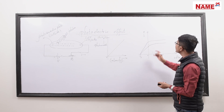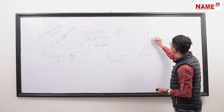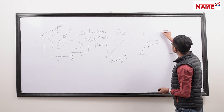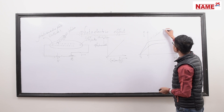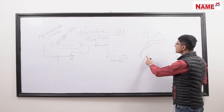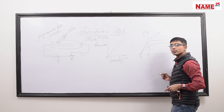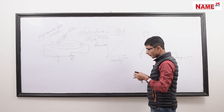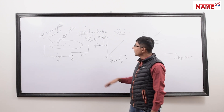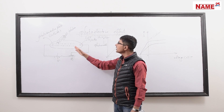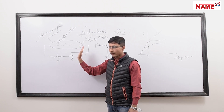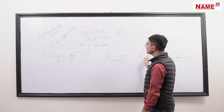We have a saturation current — a constant maximum current. Now, if we apply a negative potential to the anode, the electrons experience a repulsive force. What happens? The electrons are repelled by the negative potential at the anode.